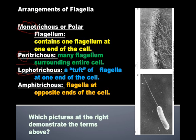Lophotrichus is where there's a tuft of flagella at one end of the cell. Amphitrichus is when you have flagella at opposite ends of the cell, almost like opposite poles — flagella at both ends.